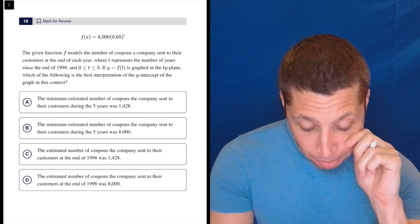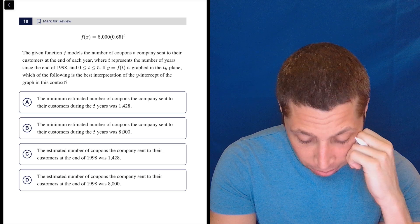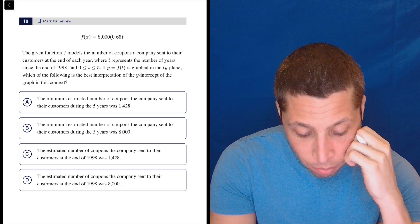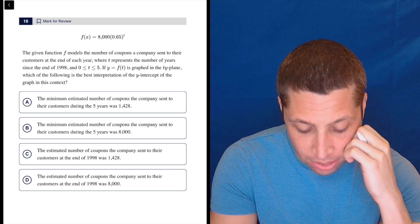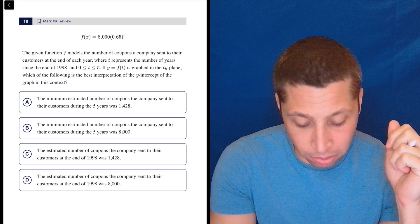The given function f models the number of coupons a company sent to their customers at the end of each year, where t represents the number of years since the end of 1998, and zero is less than or equal to t is less than or equal to five.